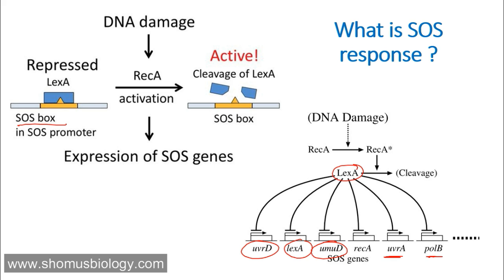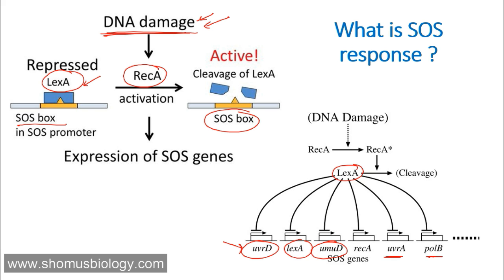LexA is not allowing the DNA repair to happen. Normally, if there is no DNA damage, we don't need DNA repair — that's why LexA does a good job of preventing DNA repair mechanisms from being activated when there is no DNA damage. But if there is DNA damage, then this damaged DNA is going to activate RecA protein. RecA is a protease that destroys LexA protein. As RecA destroys LexA, there is no inhibitor for the SOS box genes, and as a result, all these UVRD, UVRA, UMU, UMUD, and UMUC genes — all these different DNA repair mechanism-controlling genes — get activated.